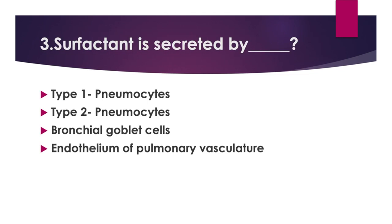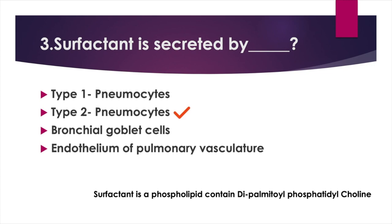Surfactant is secreted by — Option A: Type 1 pneumocytes, Option B: Type 2 pneumocytes, Option C: Bronchial goblet cells, Option D: Endothelium of pulmonary vasculature. Answer: Option B, Type 2 pneumocytes. Surfactant is a phospholipid containing dipalmitoyl phosphatidylcholine.